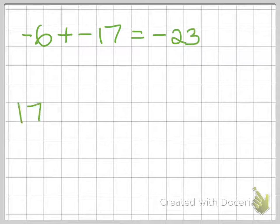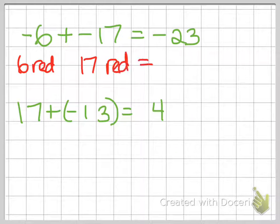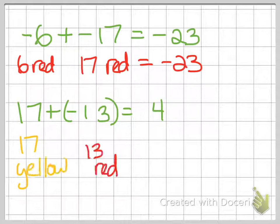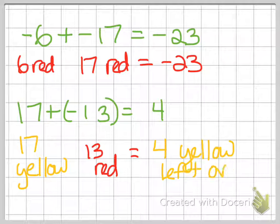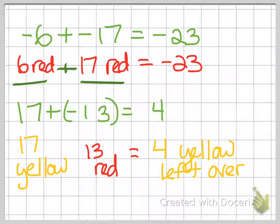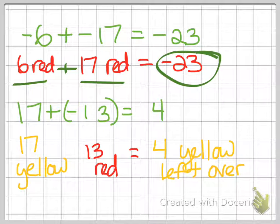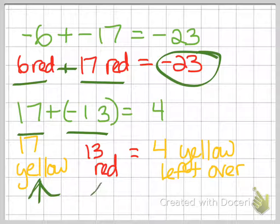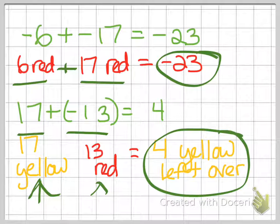Let's look at this equation. Negative 6 plus negative 17 equals negative 23. That's visualizing 6 red and 17 red added together, which gives us 23 red or negative 23. In this equation we have 17 plus negative 13. Here you have 17 yellow, 13 red. 13 of those get canceled out, and you're left with 4 left over, which are yellow, which gives you a positive answer of 4.